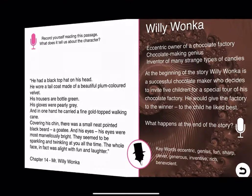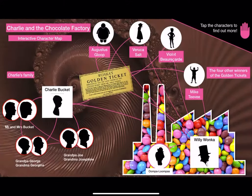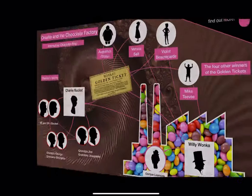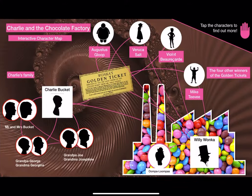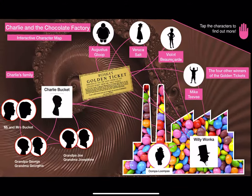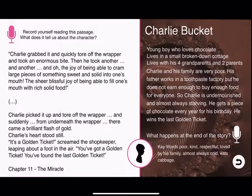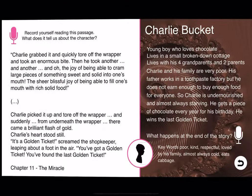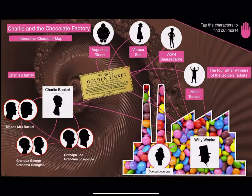Tapping on the arrow takes you back to the main page. And this, of course, works with all of the characters on the main map. You could just tap to see the detail page and tap back on the arrow to return to the main page.